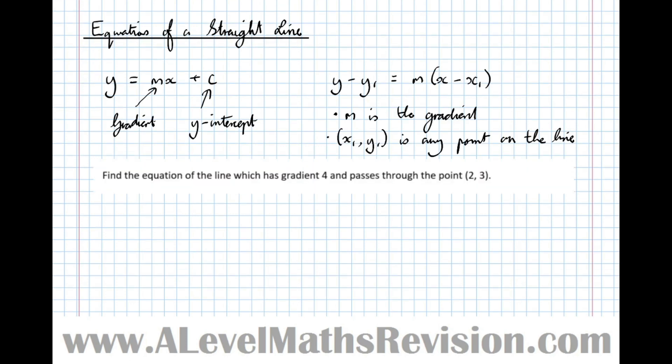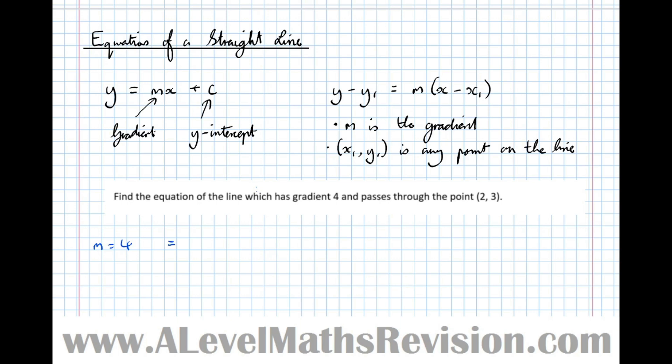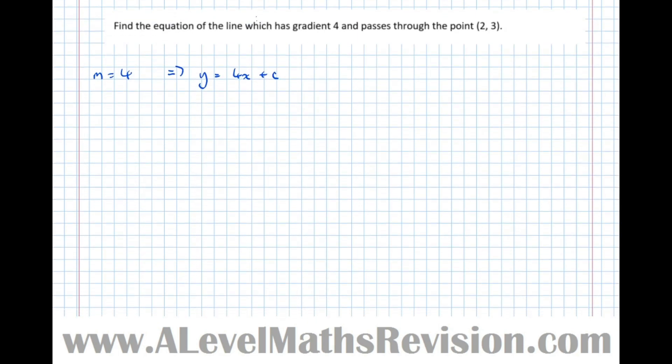This question: find the equation of the line which has gradient 4 and passes through the point 2, 3. Using this formula, the gradient's 4, so the equation is y equals 4x plus c. Now I need to find the y-intercept c by subbing in the point 2, 3. Let x equal 2, y equal 3, which means 3 equals 4 times 2 plus c, which means 3 equals 8 plus c, so c equals minus 5. Therefore, y equals 4x minus 5.